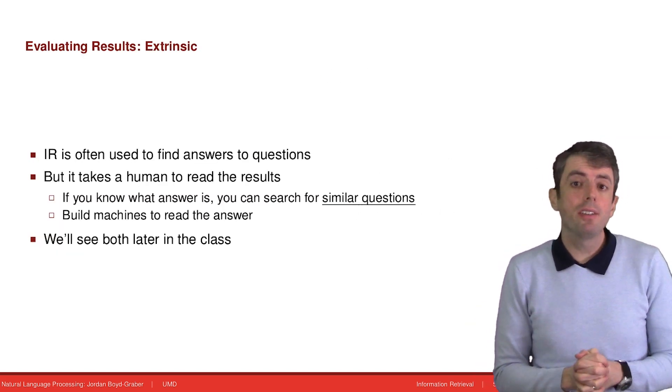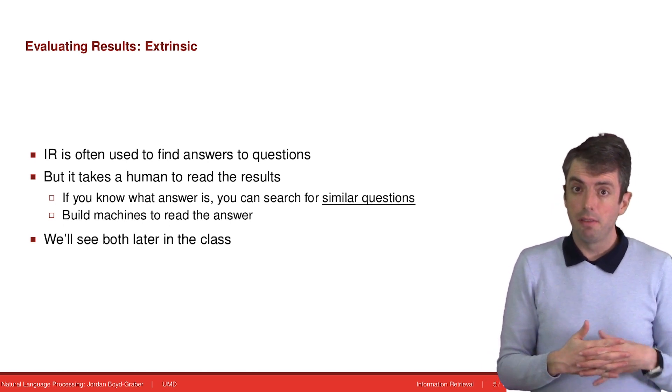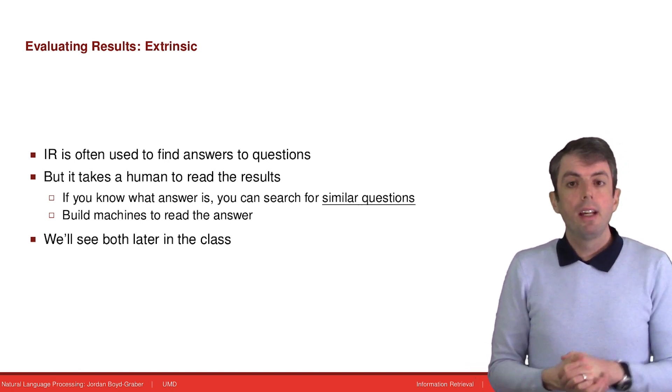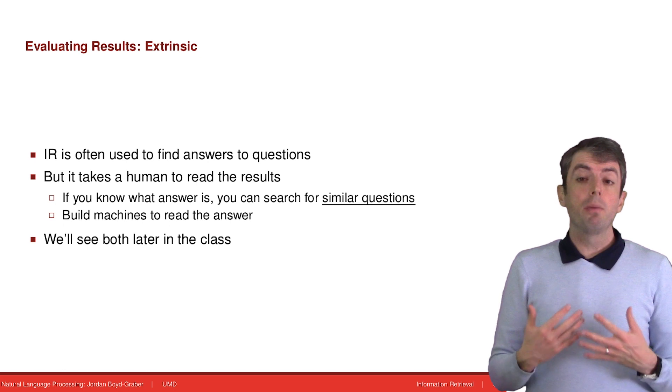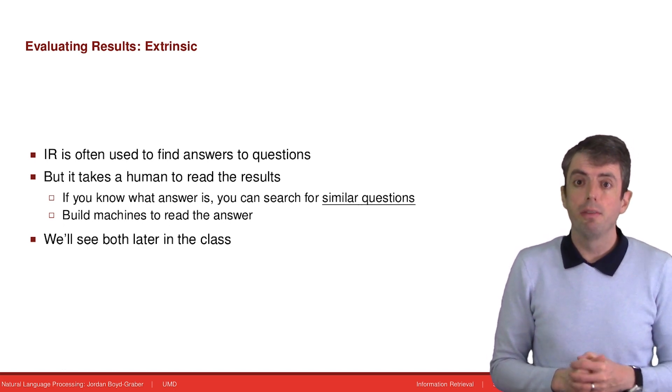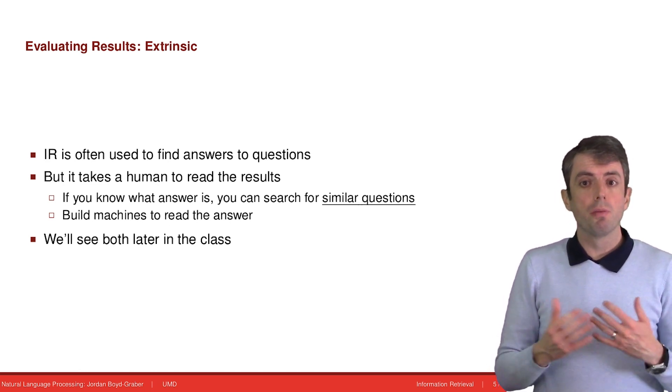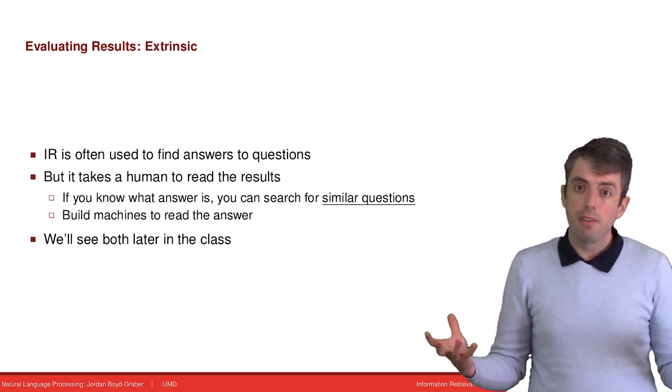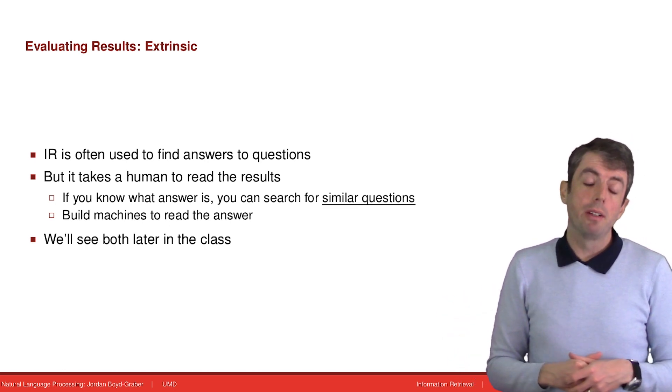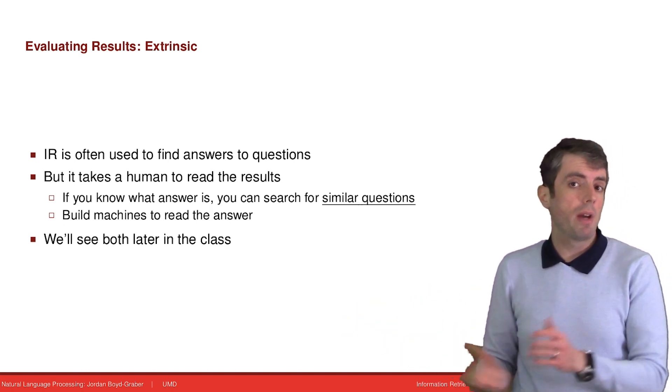But for this class, we actually won't spend all that much time on intrinsic evaluation of information retrieval. This isn't an information retrieval class. This is a natural language processing class. Instead, what we'll do is we'll spend a lot more time on extrinsic evaluation for information retrieval systems. Information retrieval systems are really useful for finding a bunch of information and we can feed that information that's hopefully relevant to whatever query we put in to downstream algorithms that answer questions.